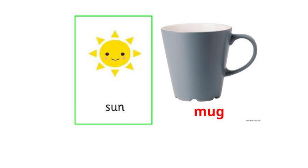Okay everybody, now take a look at these words. Can you show me the short U in these two words? Good job. Now let's read the words. S-U-N. Sun. M-U-G. Mug. Well done.